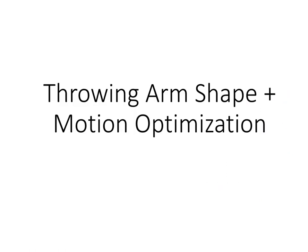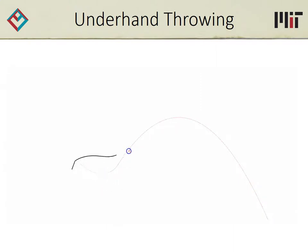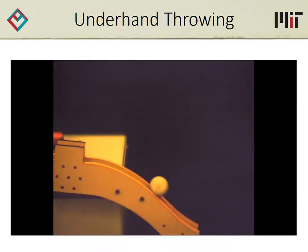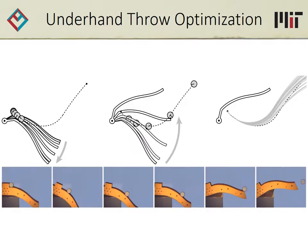Now let's go back to our original problem — optimizing the shape and motion of a robotic throwing arm. Our goal is to throw the ball as far as possible. We use regularization constraints to prevent degenerate solutions like a really long throwing arm or a really fast throwing motion. Let's start with underhand throwing. Here is a simulation of the throwing arm, and here is a video of the actual throwing arm in action. We've compared the measured and predicted ball trajectories to each other — they align pretty well, which gives us confidence that our solution makes physical sense.